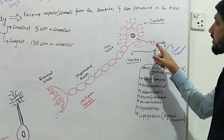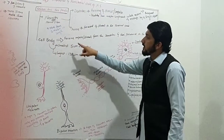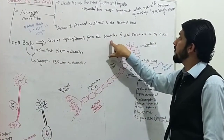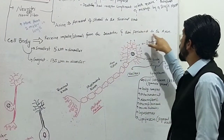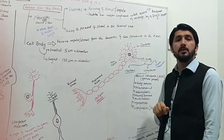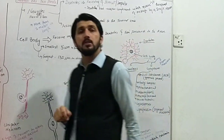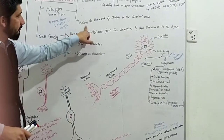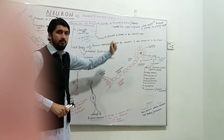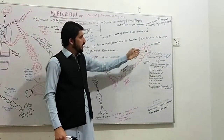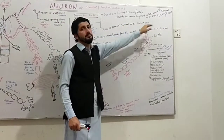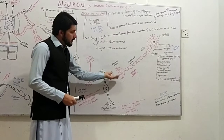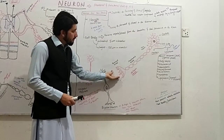The dendrites receive the message and pass it toward the cell body. The cell body then receives the impulse and stimuli from the dendrites and forwards it to the axon. The axon receives the stimuli from the cell body and passes it toward the terminal lobe or axonal lobe.